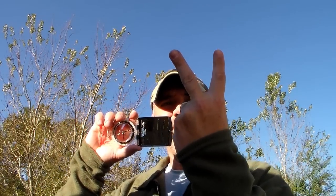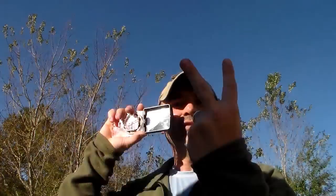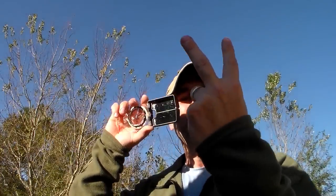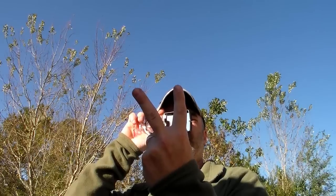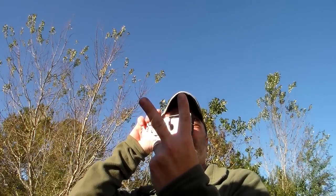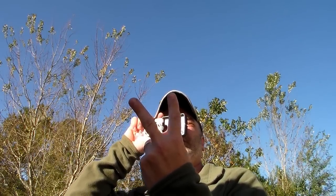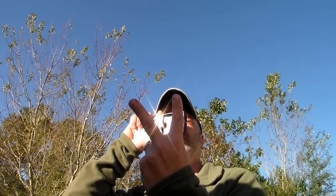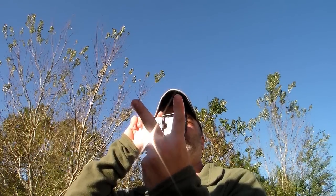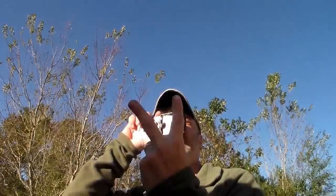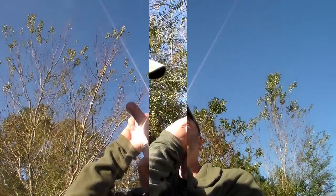For the signal mirror, simply face towards the sun. Use your fingers as a V-notch, and you simply want to make sure you can catch the glint of the sun. Put the glint, the reflection of the sun, aim it through the V-notch and aim it towards your target, and then simply go up and down with the reflection to signal your position.